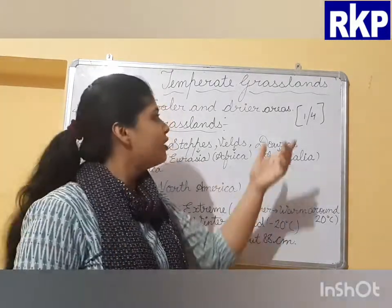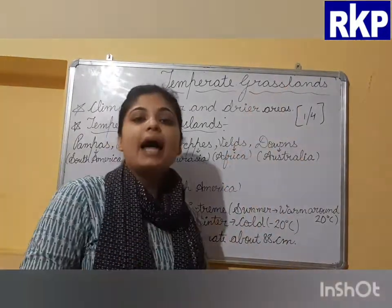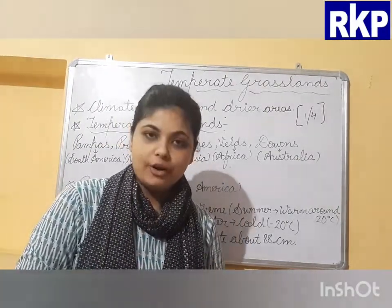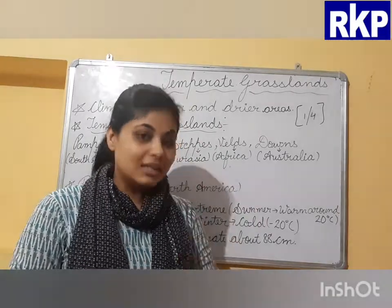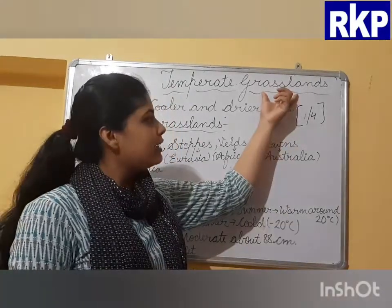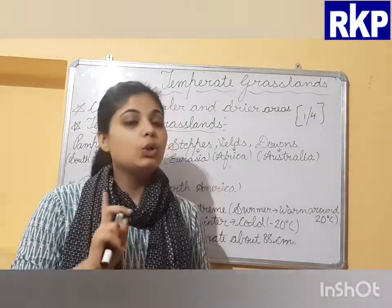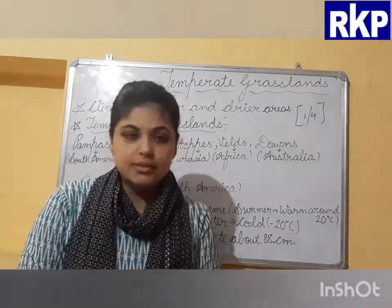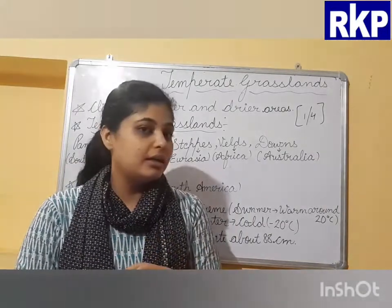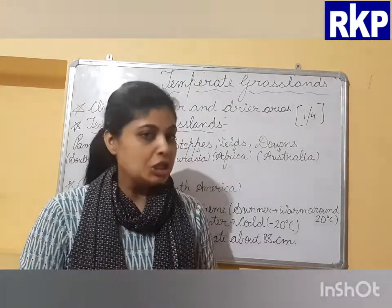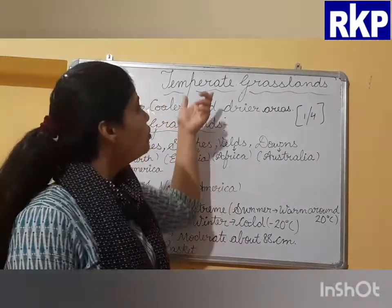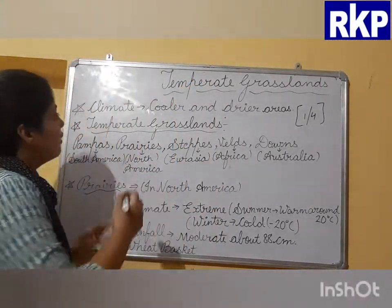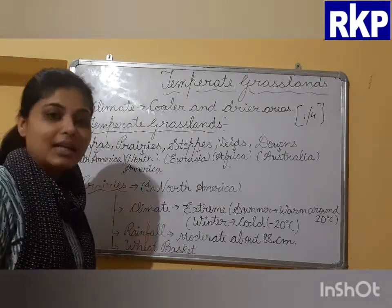The trees and plants found on grasslands depend on the climate and type of soil there. Based on climate, grasslands are divided into two categories: temperate and tropical. In today's session we will focus on temperate grasslands, as that is what is covered in the textbook.